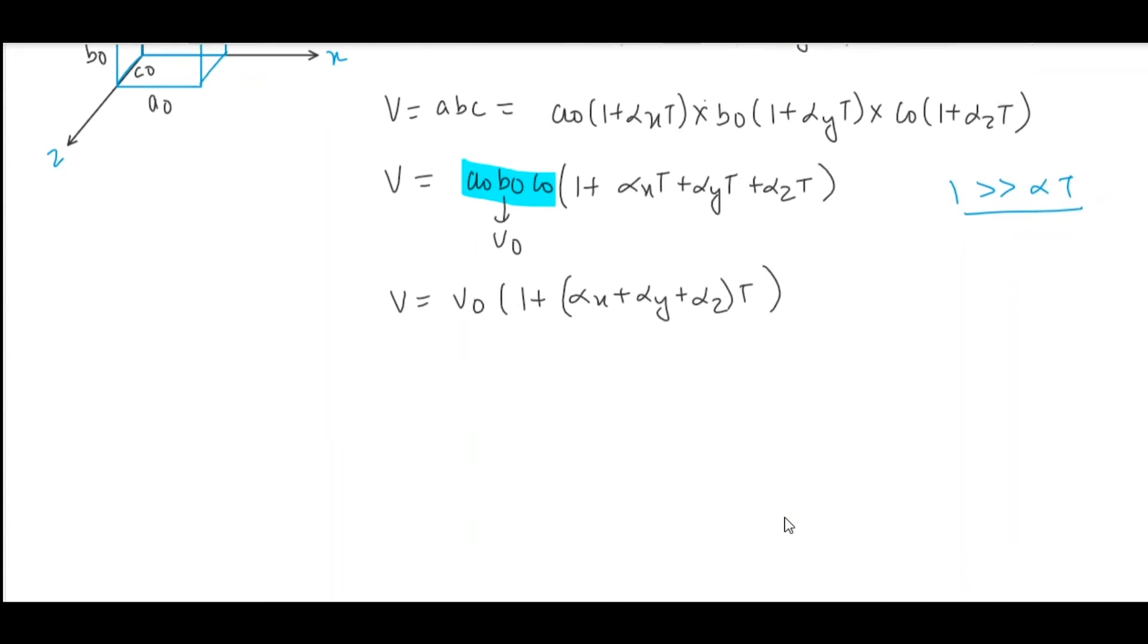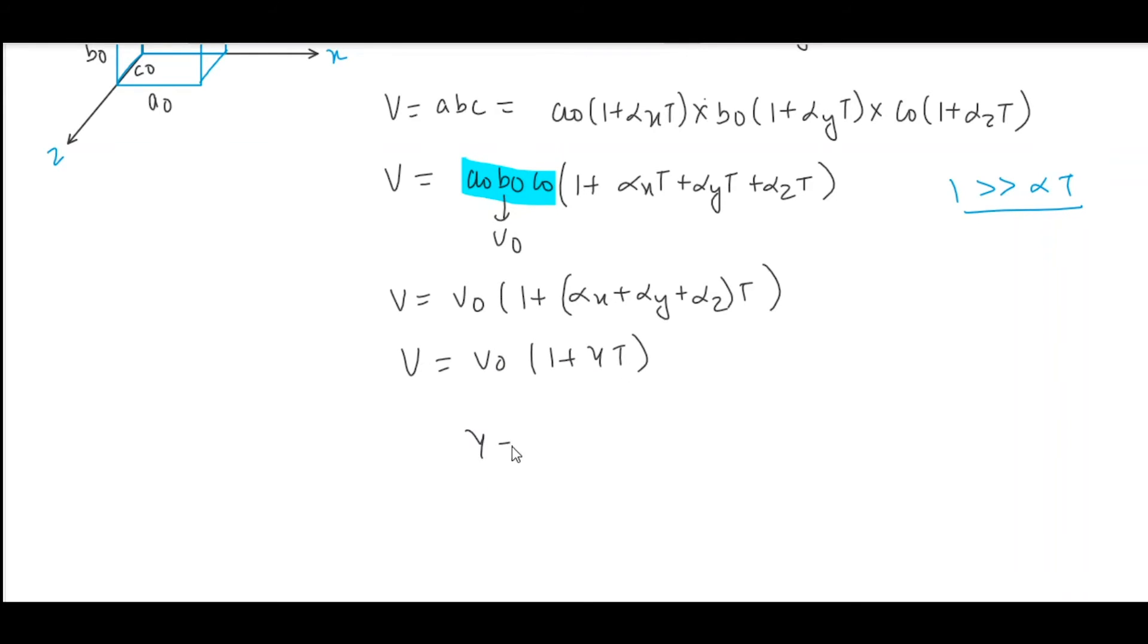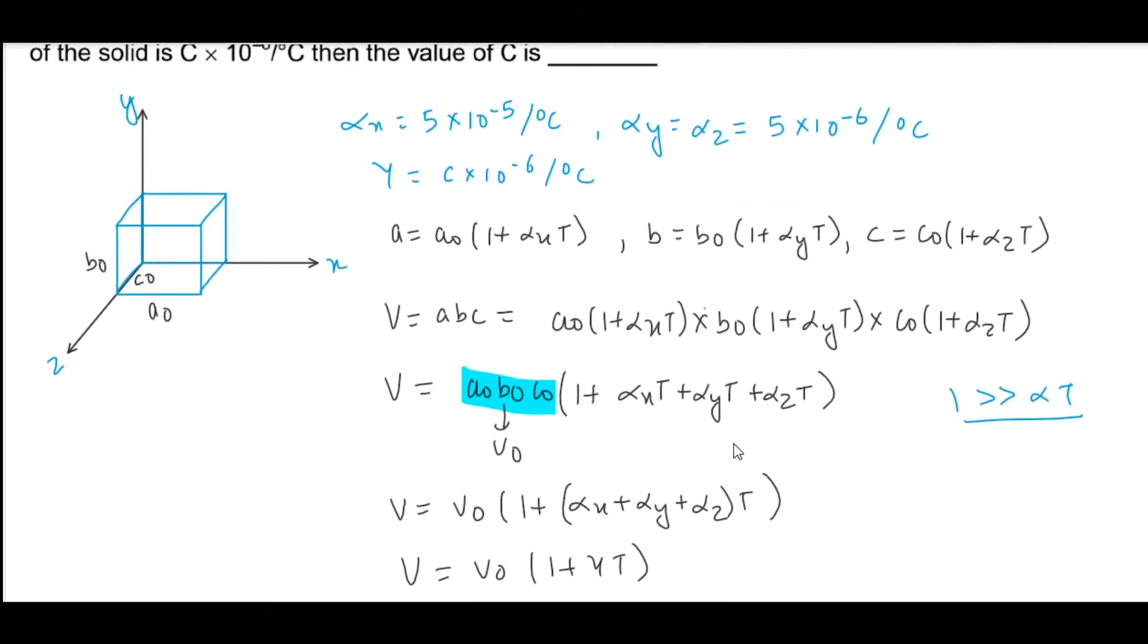Now let's compare this relation with the standard relation V is equal to V0 times 1 plus gamma T. So gamma is alpha x plus alpha y plus alpha z, and we know the values of alpha x, alpha y, alpha z.